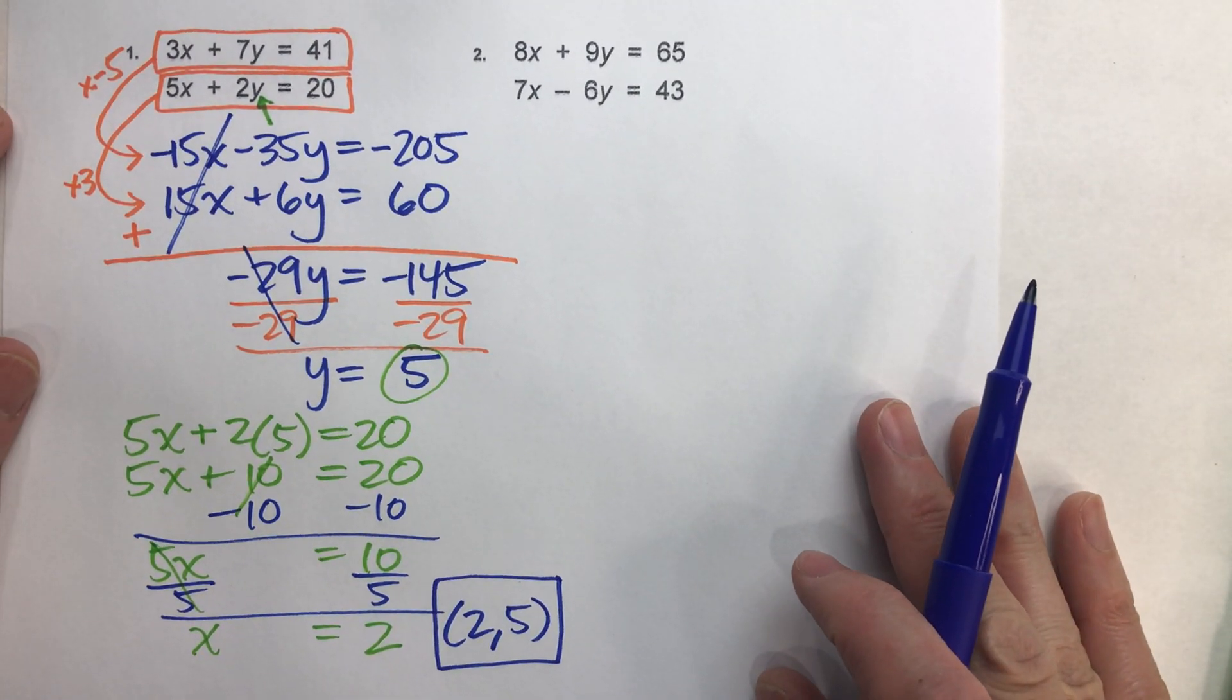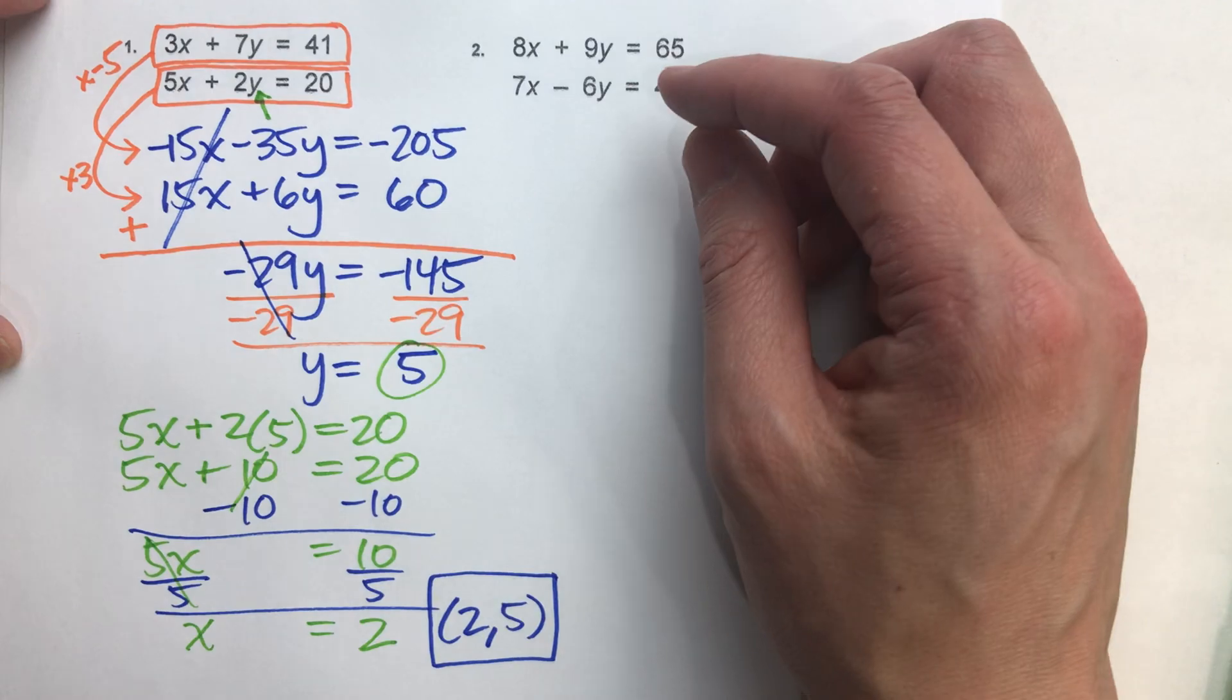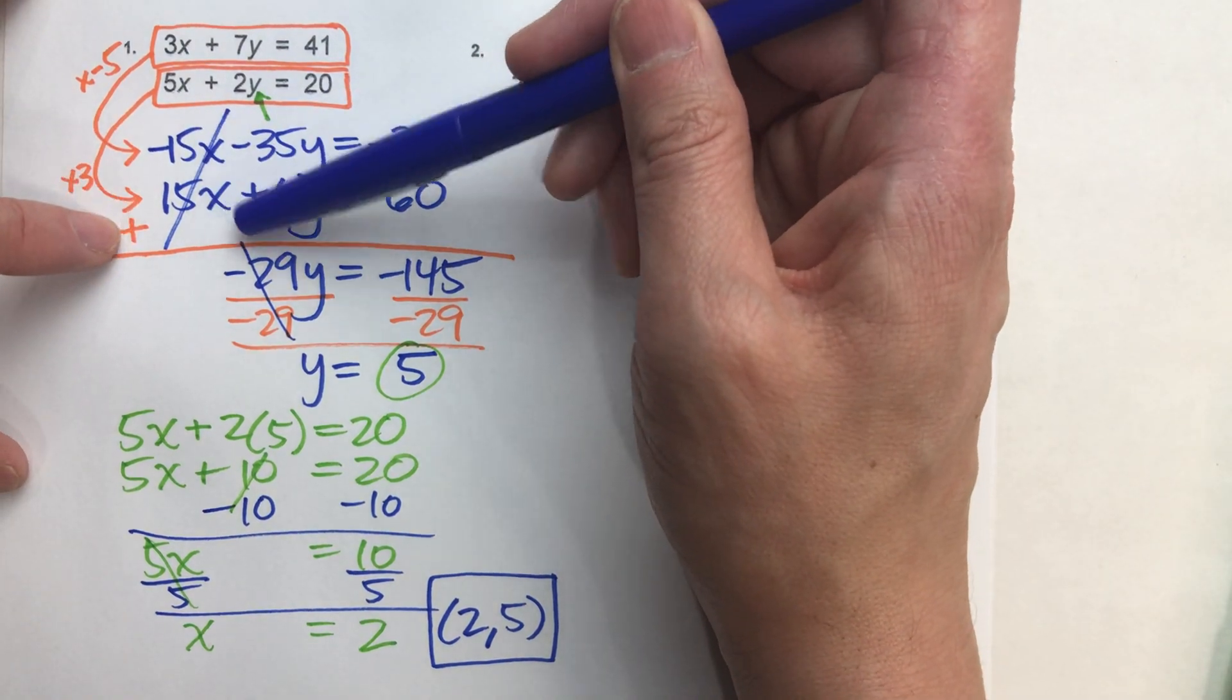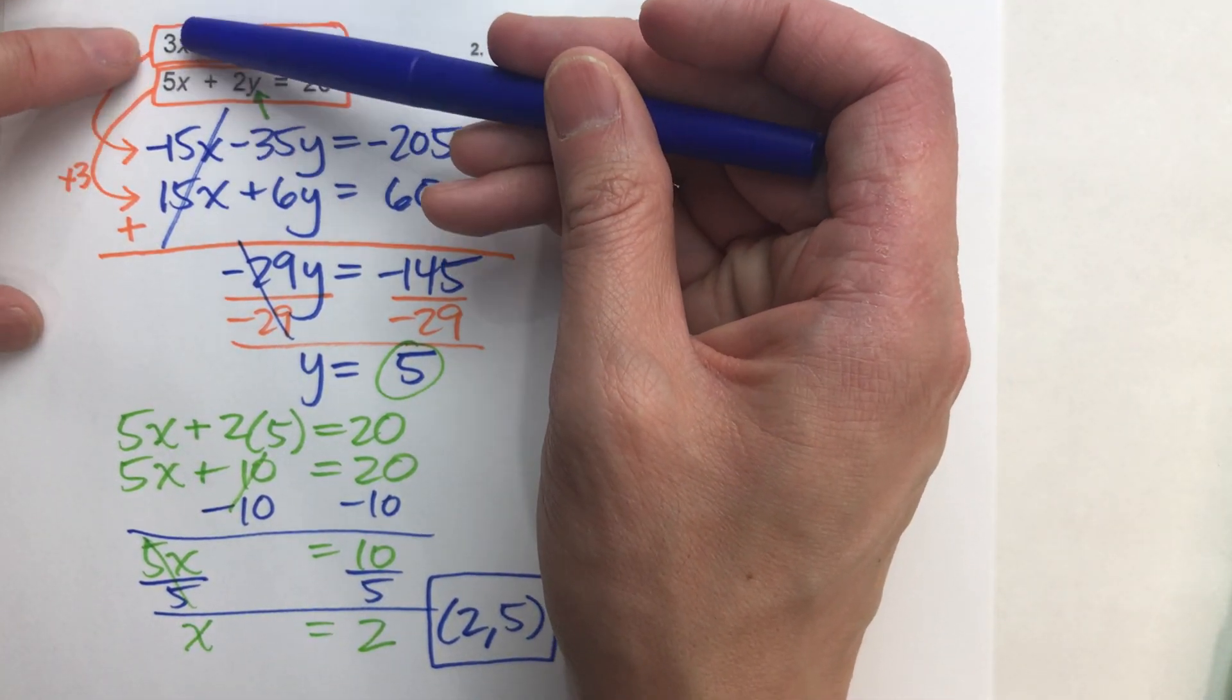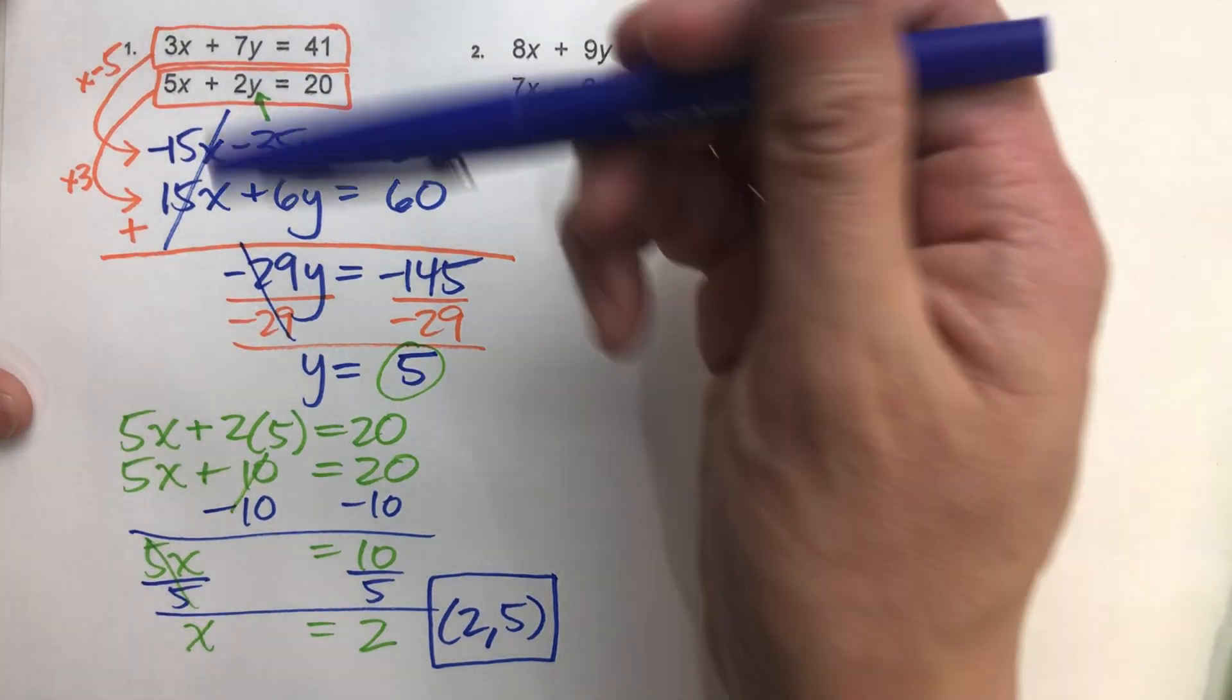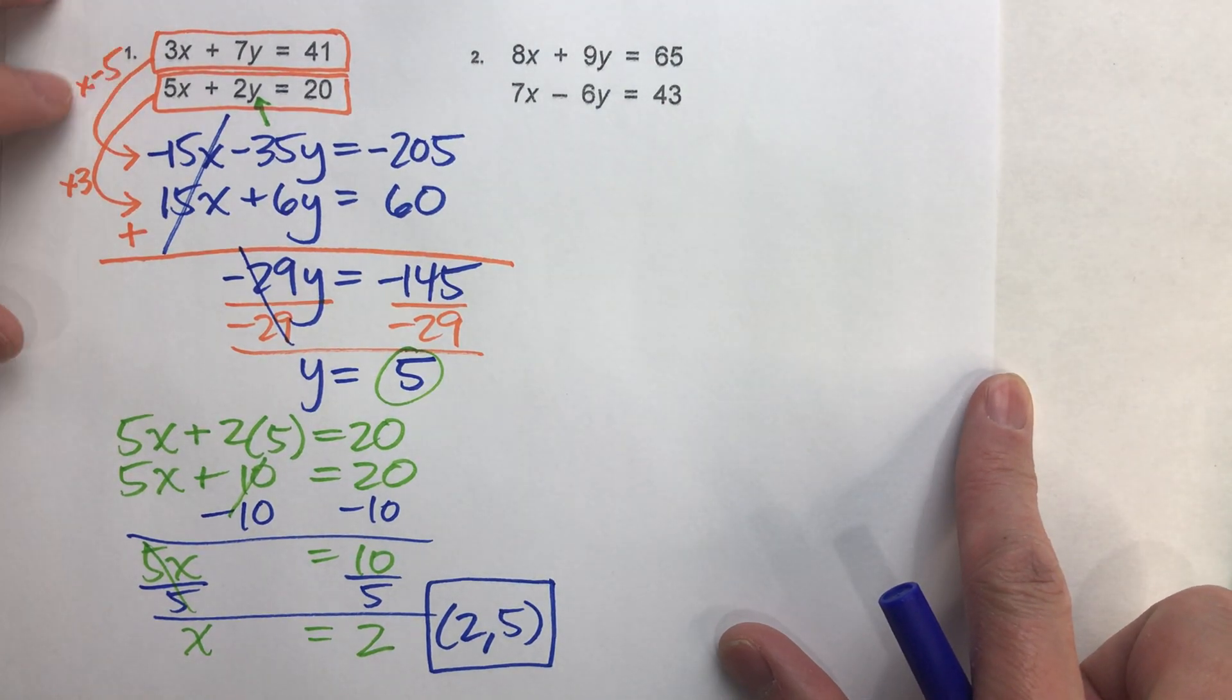But really that first step is the key to the whole problem. So trying to figure out what we would multiply the two equations so either the x's or y's match up. What you're looking for is a common multiple between the two equations. Trying to find a common multiple for 3x and 5x so that you can work with it. Although it's not exactly a common multiple because you need one of them to be positive and one of them to be negative. But that's kind of the thinking you want to use to figure out what to multiply by.